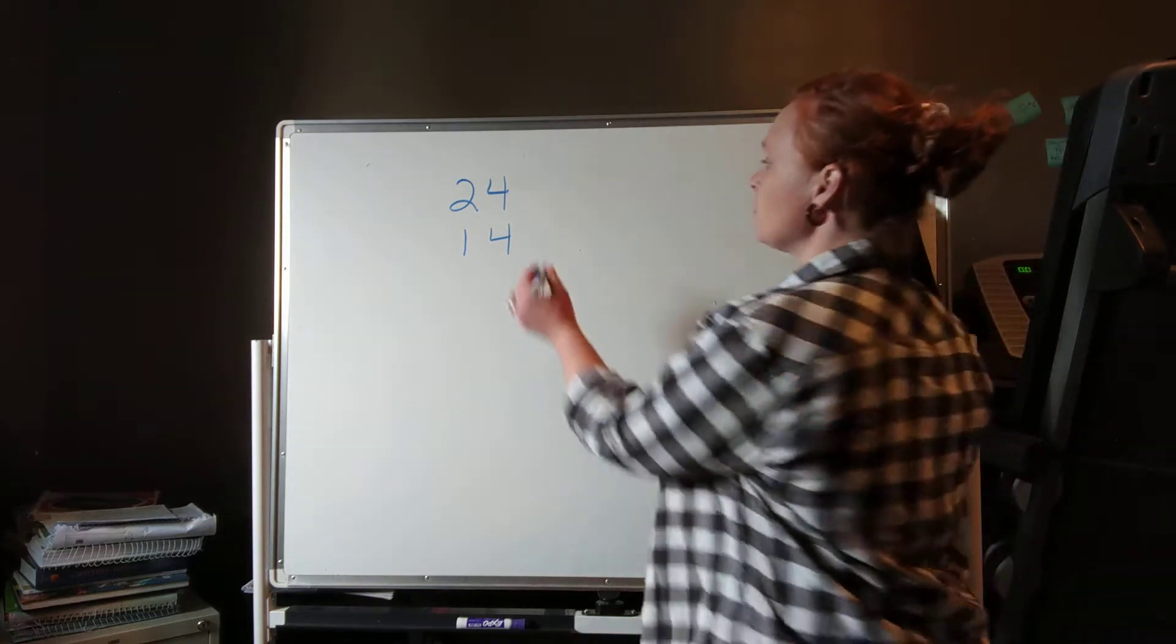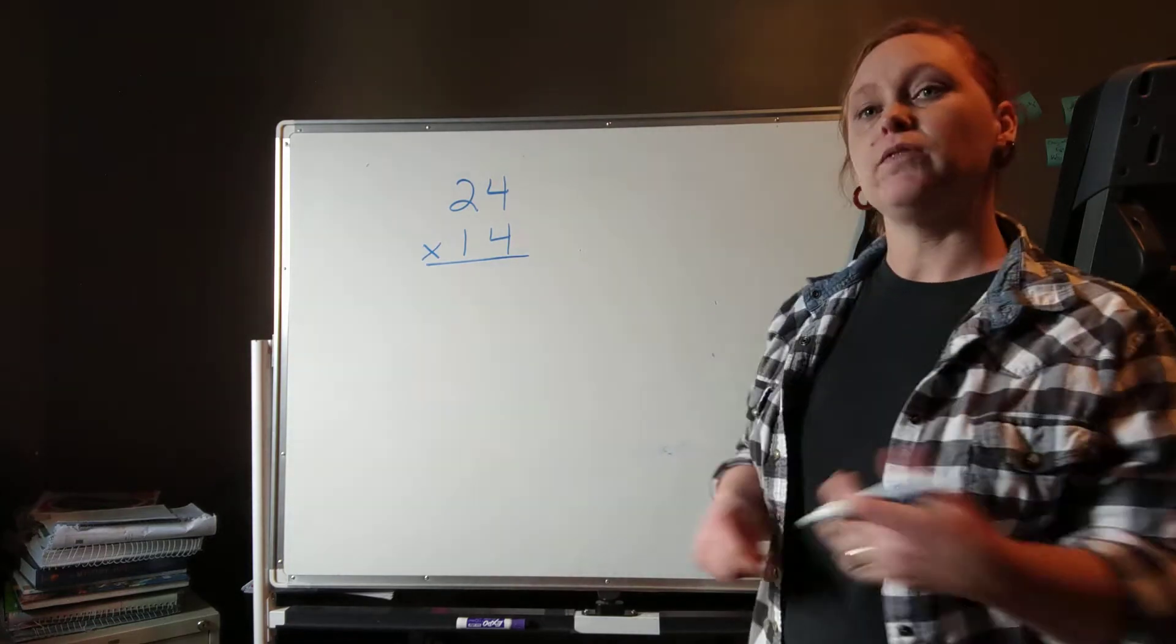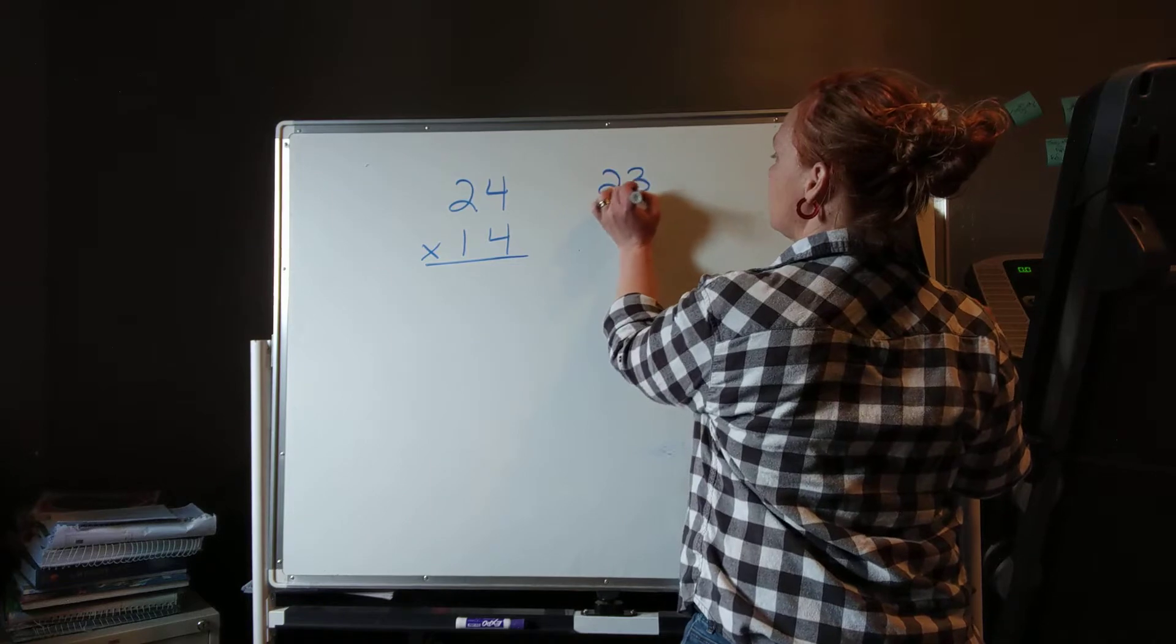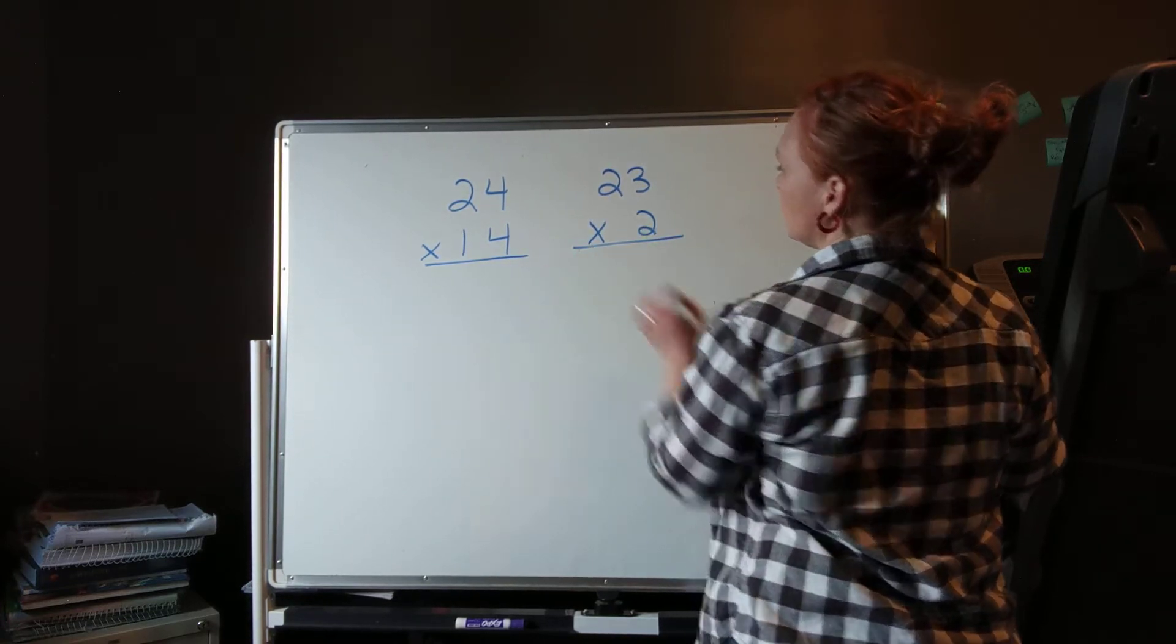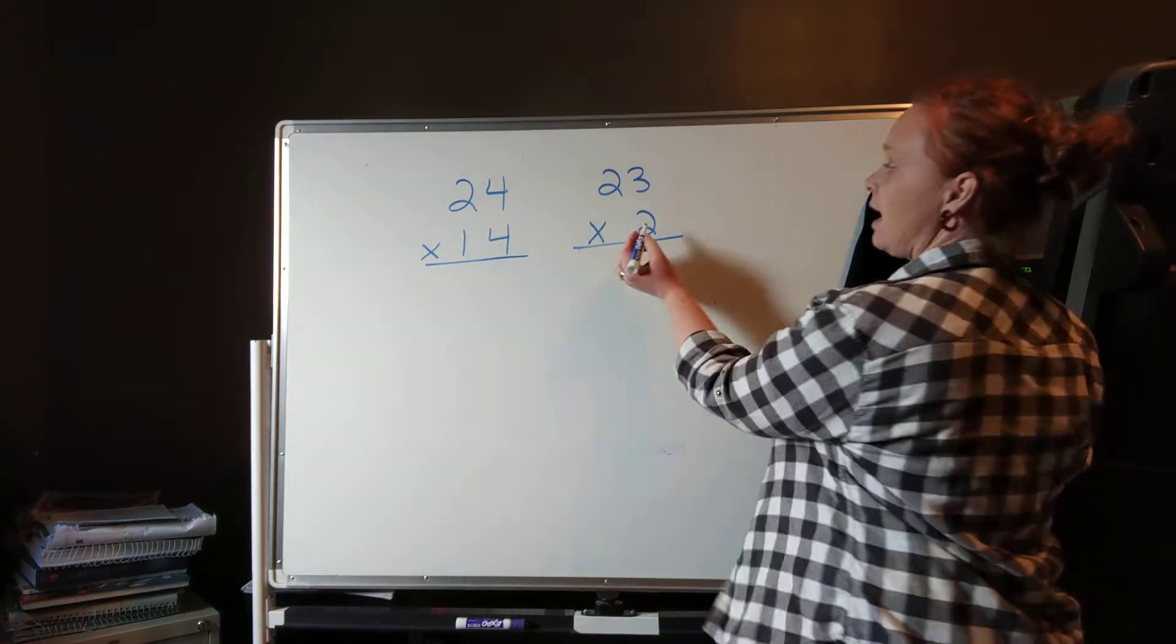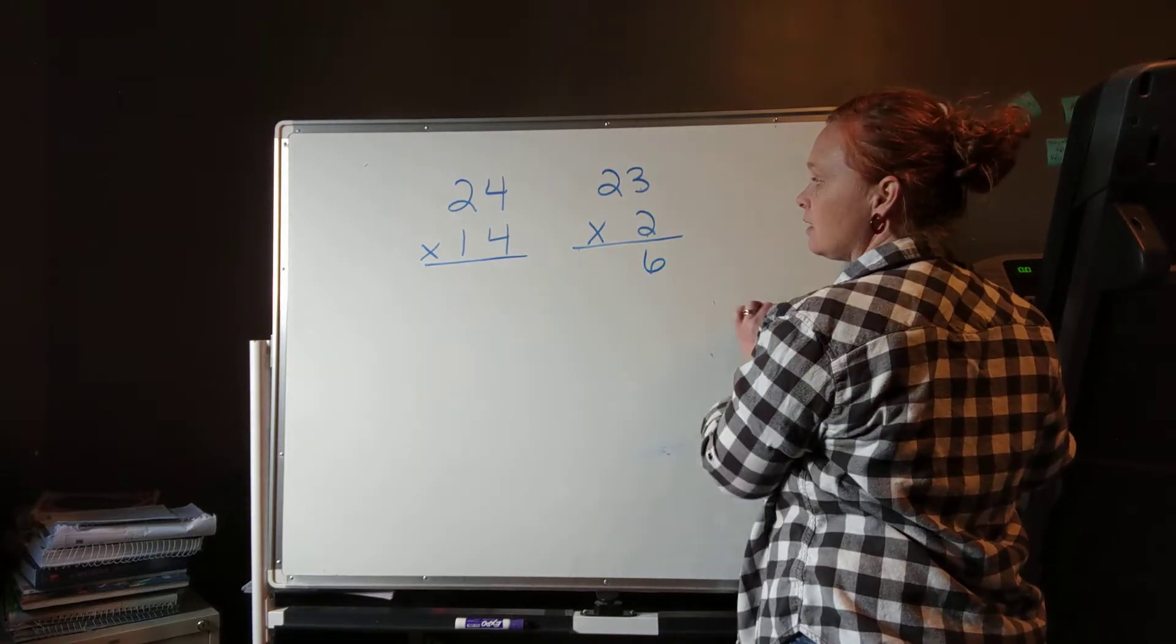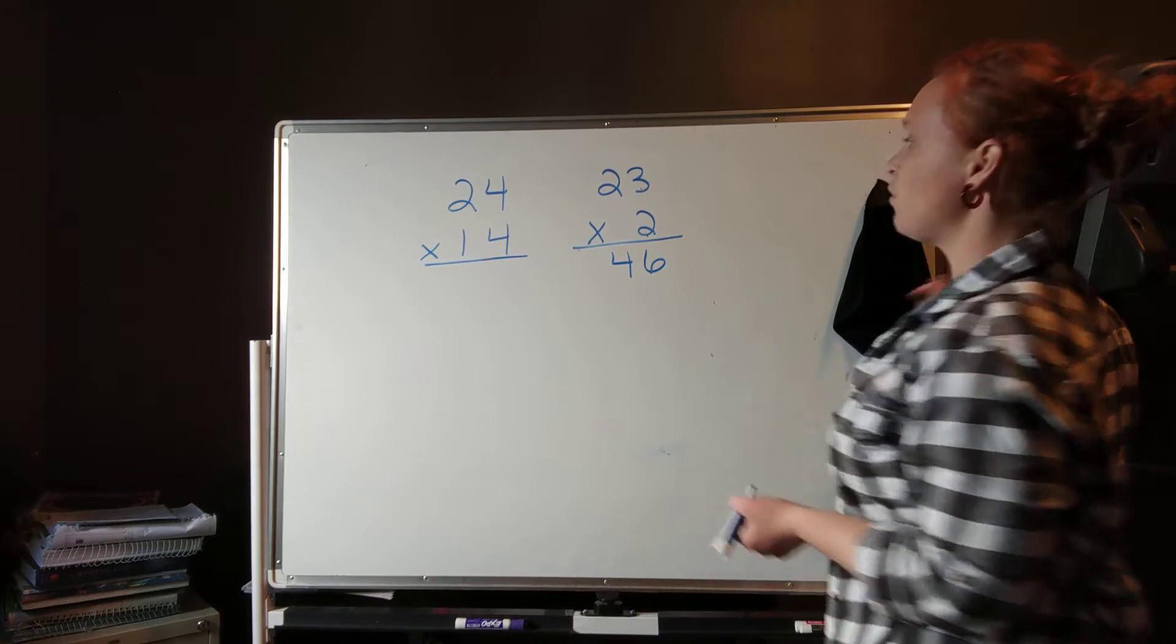Okay, so before I get to this problem though, let's just review some multiplication. Let's do this problem first: 23 times 2. So remember when I'm multiplying and I just have one digit, I have to say 2 times 3 is 6, and 2 times 2 is 4. So we get 46.